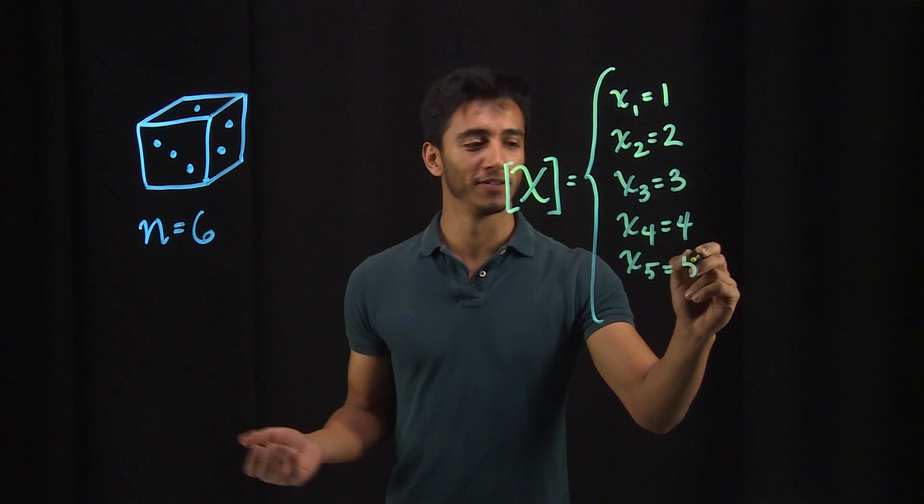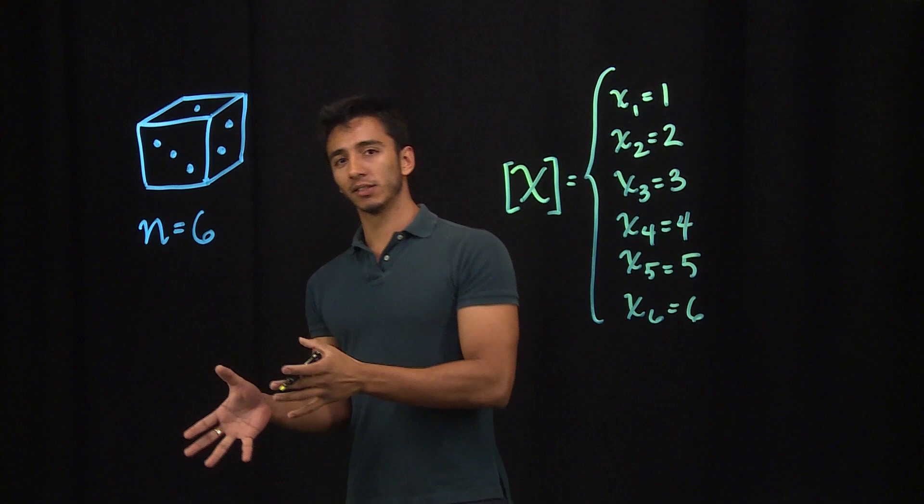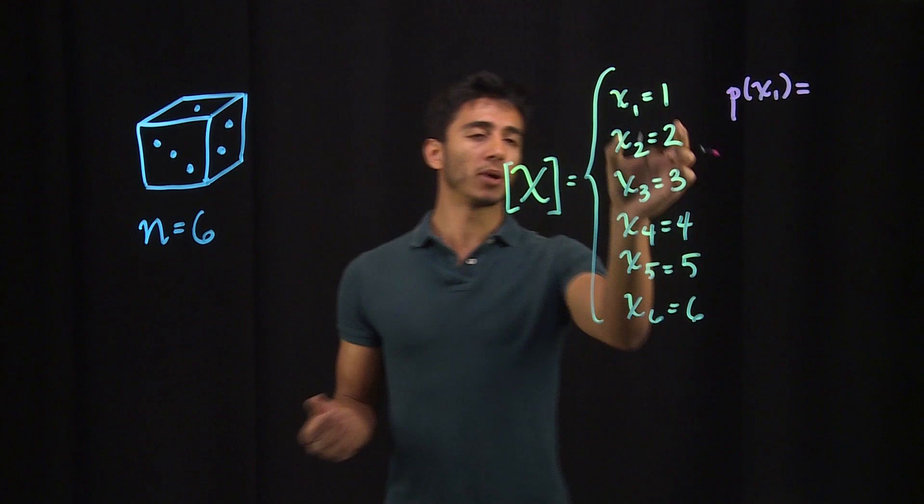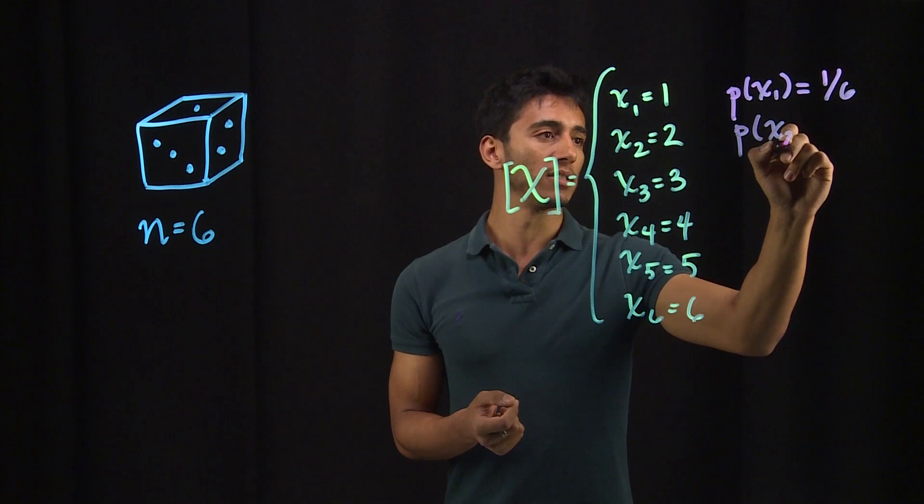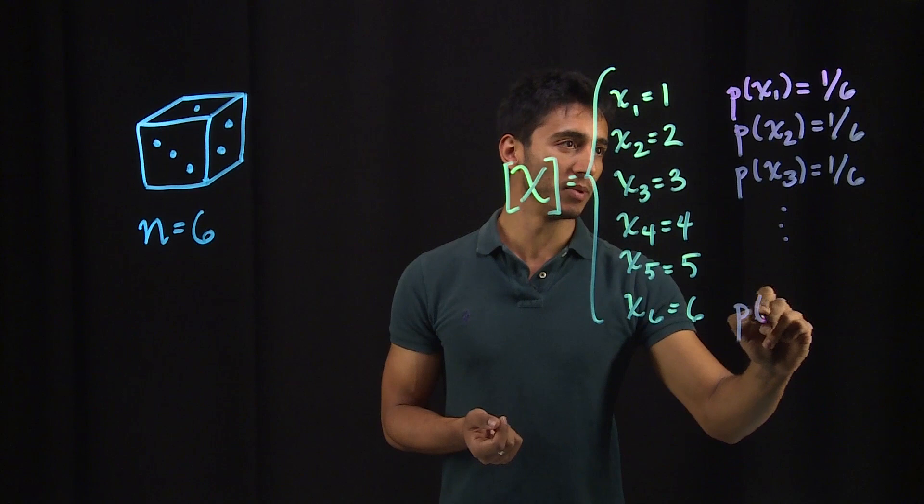So beyond the sample space, there's also the probability associated with each possible value. Let's represent that. The probability of X1 is 1 over 6, the probability of X2 is also 1 over 6, probability of X3, also 1 over 6, all the way down to the probability of X6, which is also 1 over 6.